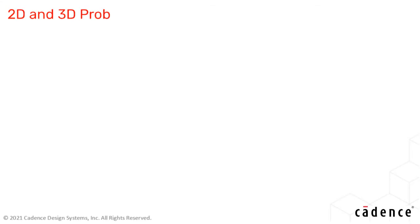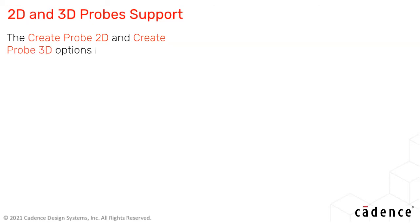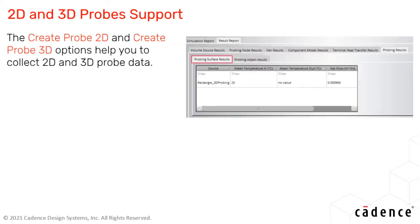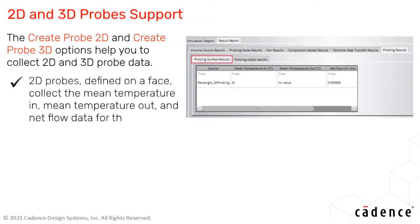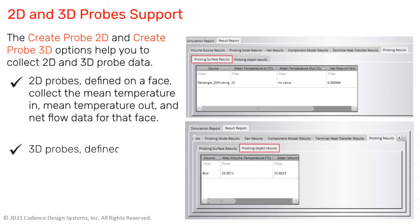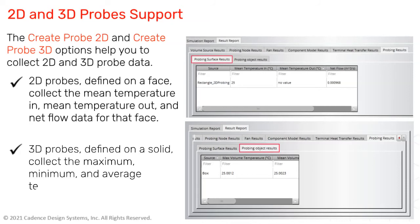2D and 3D probes are now supported in the Celsius fluid flow simulation module. You can use 2D and 3D probes as a diagnostic tool to check the temperature, pressure, or velocity at specified locations, called nodes. After the simulation run, you can use the probing data to analyze the results.